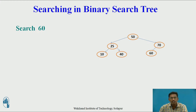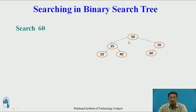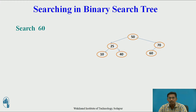Now we will see how searching is performed in a binary search tree. Suppose I want to search for 60 in this binary search tree. Always remember that insertion and searching is done from the root level to the leaf node, not from leaf node to root. So searching starts from the root level. First, 60 is compared with 50. 60 is not equal to 50, so we check whether 60 is greater than or less than 50. Since 60 is greater than 50, we know that 60 should be present on the right subtree.